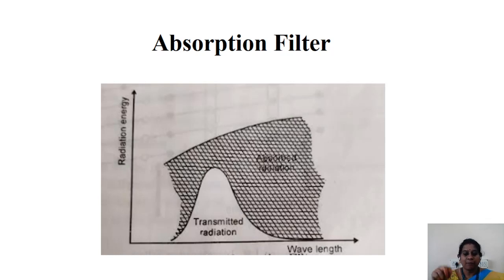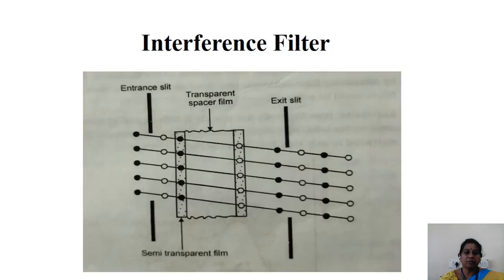Next comes the interference filter. Interference filters, please have a look at this diagram. These interference filters consist of two semi-transparent layers of silver deposited on glass,